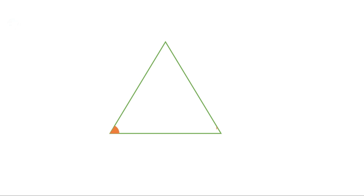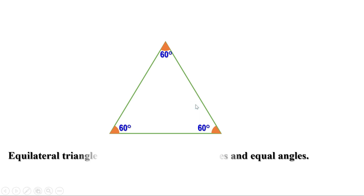Let us consider a triangle. Suppose all the angles of this triangle are equal — then how much is each angle? We know the sum of the three angles of a triangle is 180 degrees. If all the angles are equal, then one angle is 180 divided by 3, or 60 degrees. When all angles of a triangle are equal, all its sides are also equal.